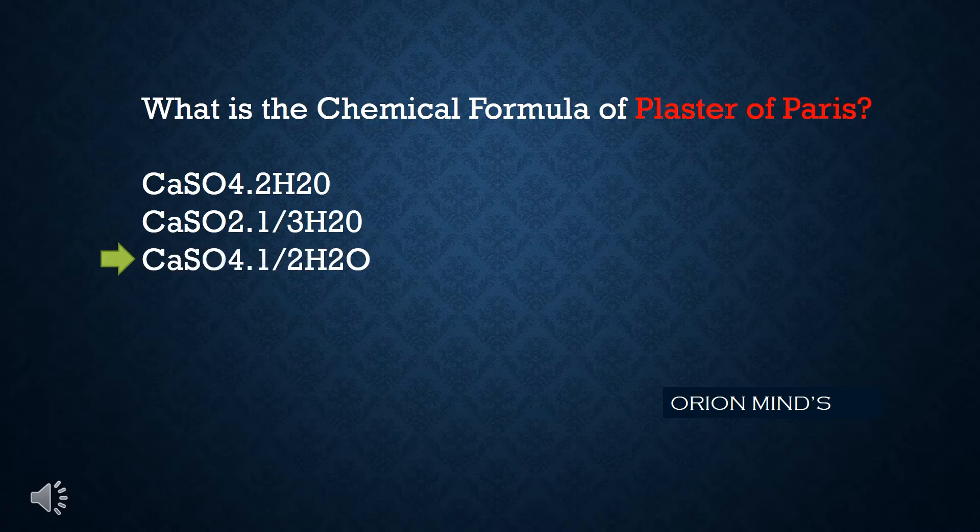What is the chemical formula of plaster of paris? The answer is CaSO4·½H2O.